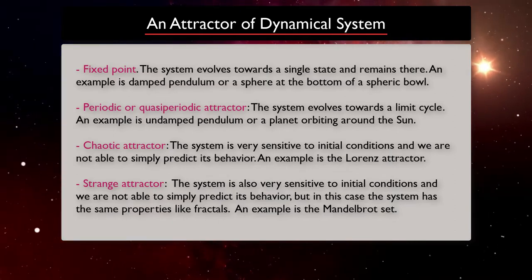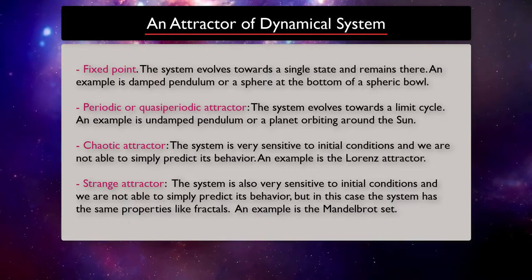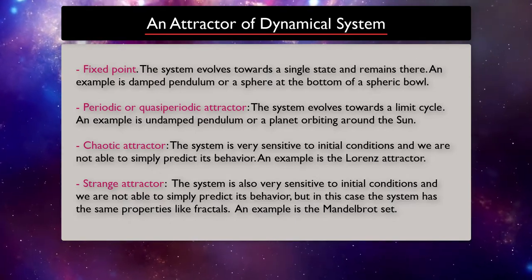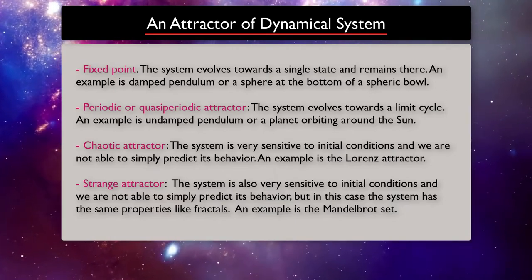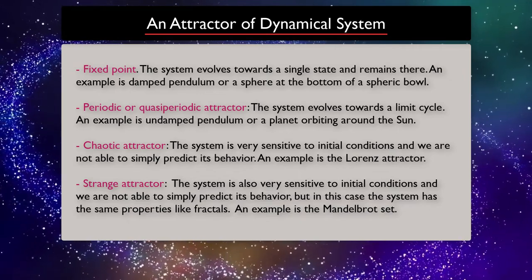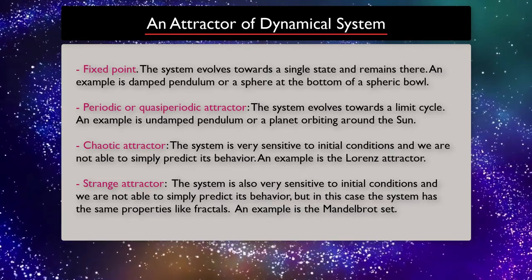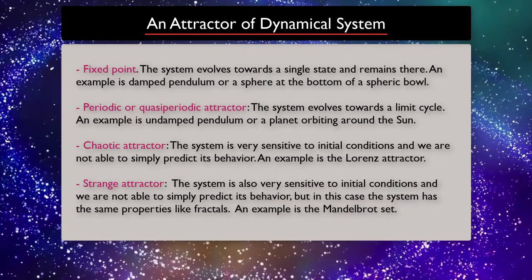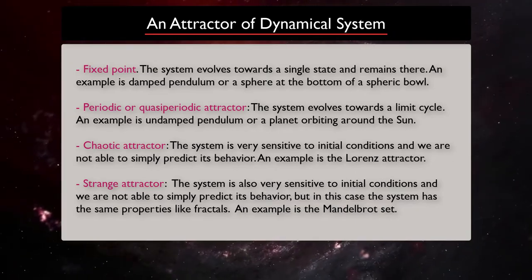An example of a chaotic attractor is the Lorenz attractor. But there is another type of attractor which we have not talked about yet: a strange attractor. The system has a strange attractor if it is also very sensitive to initial conditions and we are not able to simply predict its behavior, but in this case the system has the same properties as fractals. In other words, the strange attractor represents a fractal. An example is the Mandelbrot set.